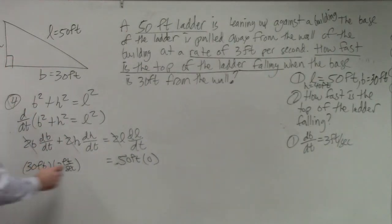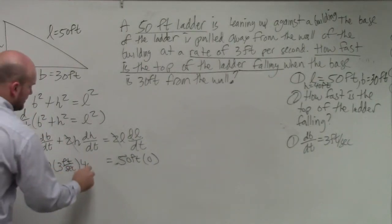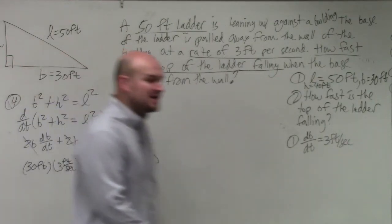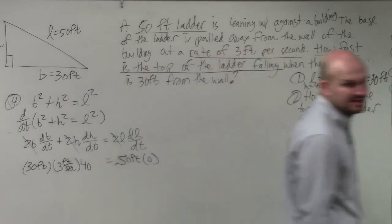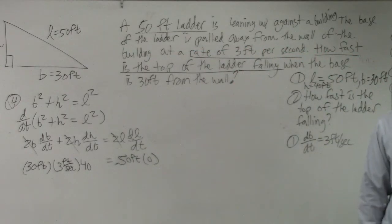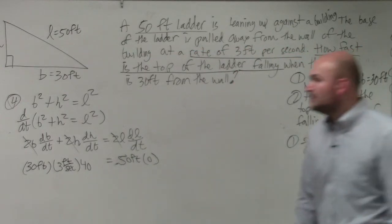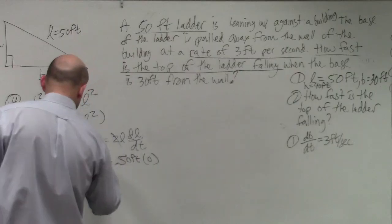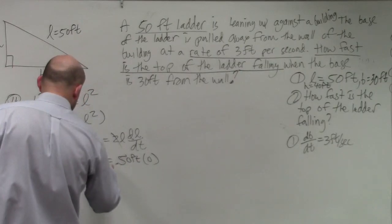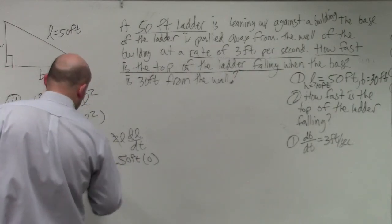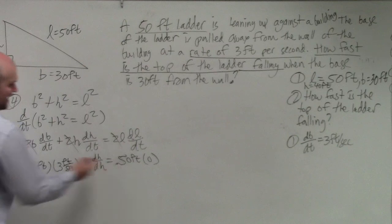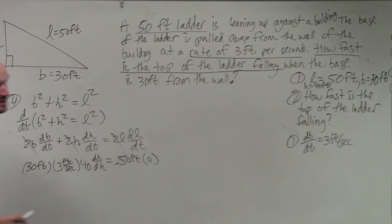H is 40. We know what the change in the base is, but do we know what the change in the height is? No. So dH/dt is what we're solving for. Anything times 0 is going to be 0.